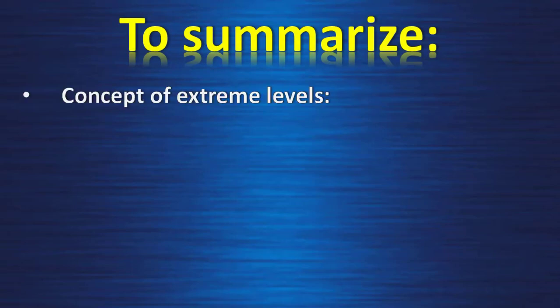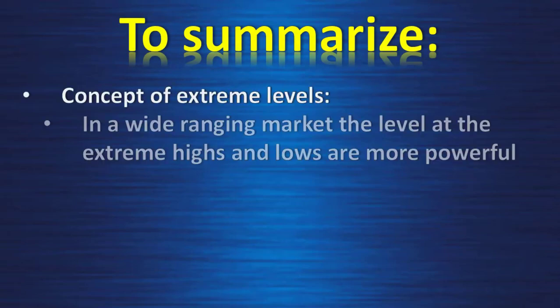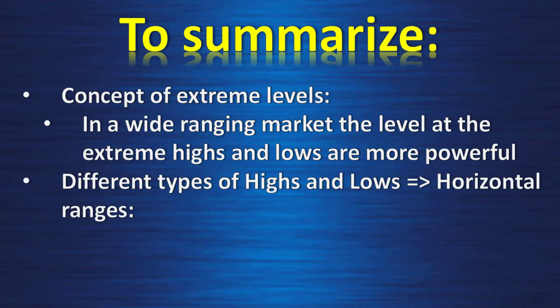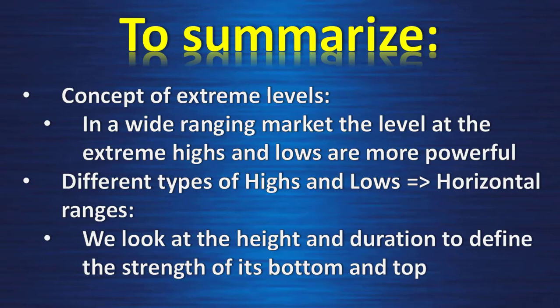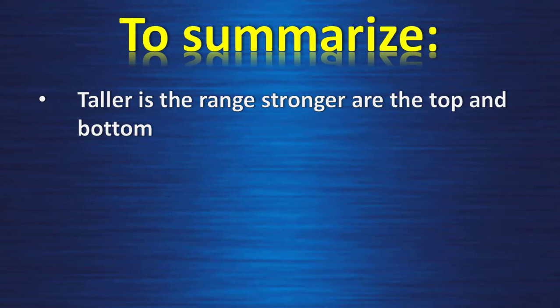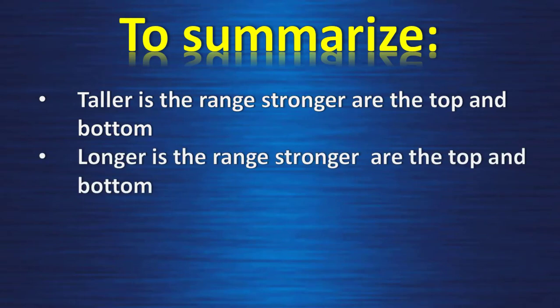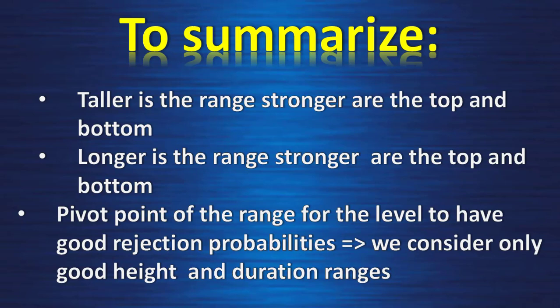To summarize: Concept of Extreme Levels — in a wide-ranging market, the levels at the extreme highs and lows are more powerful. Different types of highs and lows — for Horizontal Ranges, we look at the height and the duration to define the strength of its bottom and top. Taller range means stronger top and bottom; longer range means stronger top and bottom — we combine both elements. For Pivot Points of the Range, we consider only good height and duration ranges for the level to have good rejection probability.